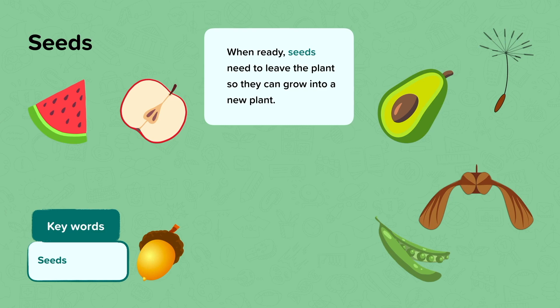Different plants make different types of seeds. You can see here the seeds of different plants. Some have lots of seeds in a small space, some have very small seeds, whereas some have very large seeds.